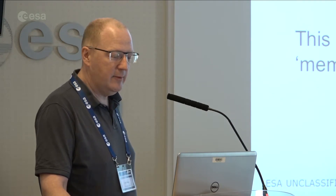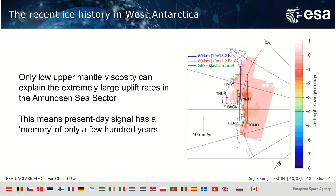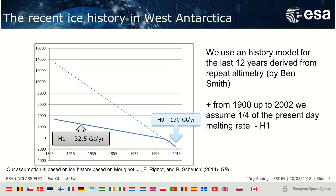The signal has a memory of only a few hundred years. Looking at the GPS rates and different models, you really just need a very low elastic lithosphere. If you look at the ice history of the area using different ice models, the minus 130 gigatons per year estimated for this one area is something recent that cannot have been going on for a long time - if it had been continuing, there would be no ice in the Amundsen Sea embayment. Something seems to have changed around the year 2002, going from ice loss of around 32.5 gigatons per year to something more than four times the ice loss.